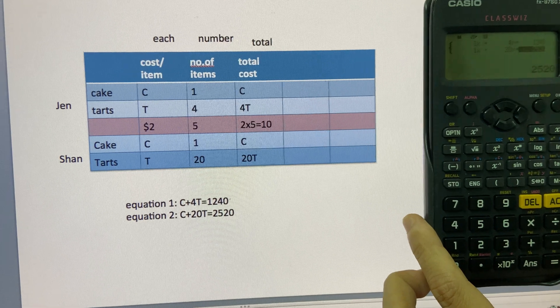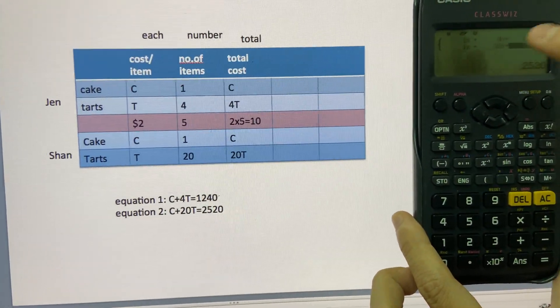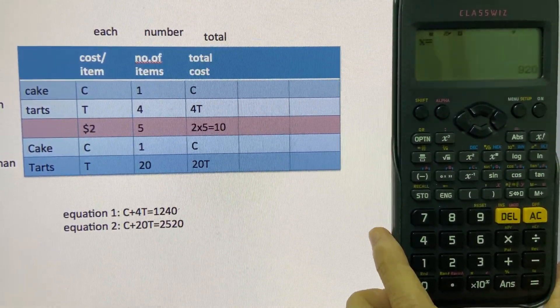So I have keyed in everything to the calculator. You can double check. Everything is all right. Just press equal.